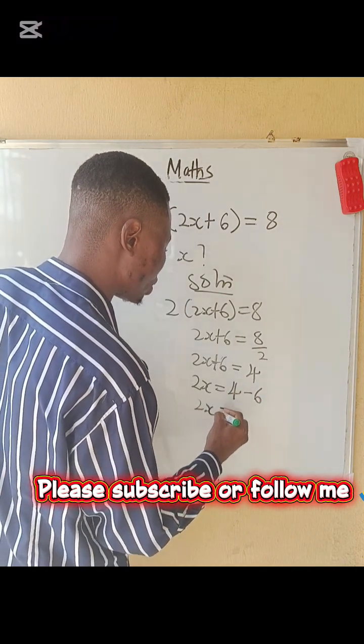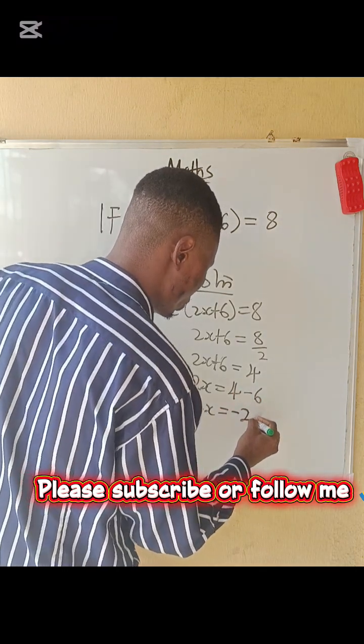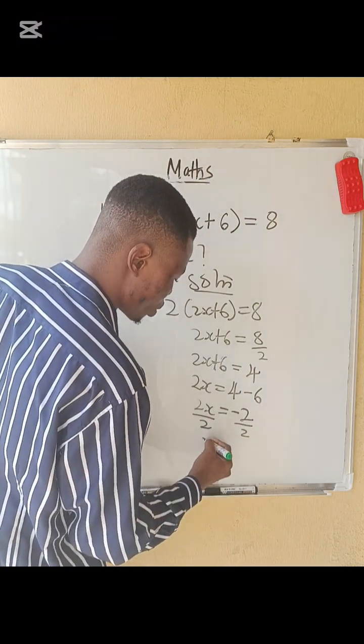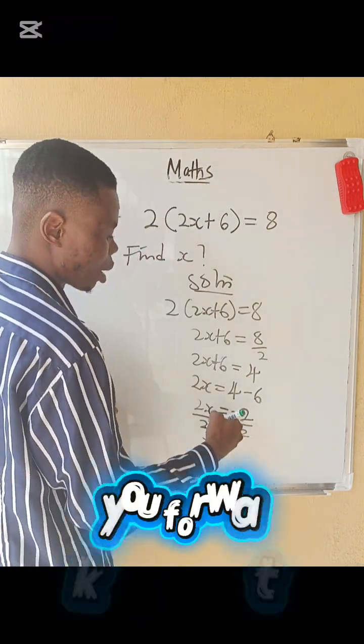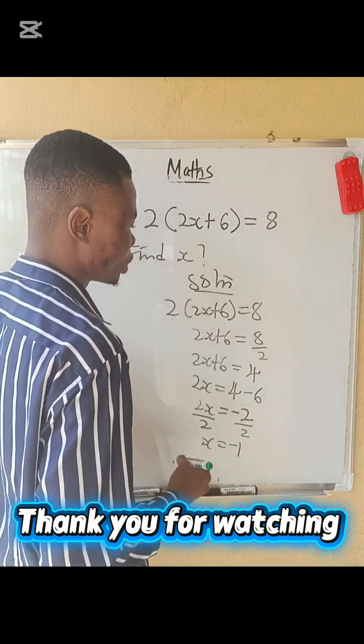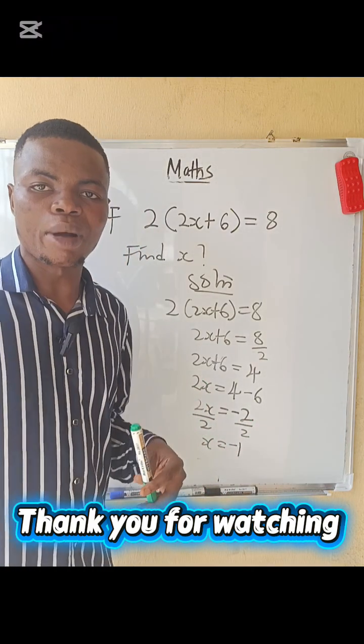So we have 2x equals to negative 2. So divide by 2, we have this. So x equals to minus 2 divided by 2 is going to give us minus 1, which is the answer. Bye-bye.